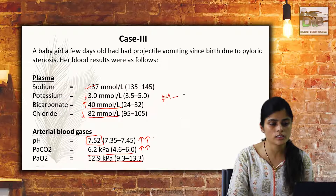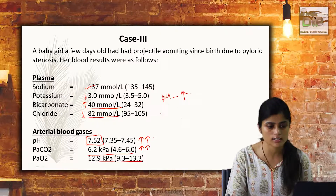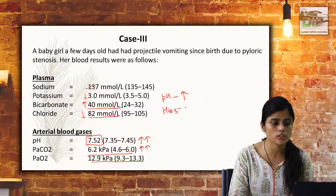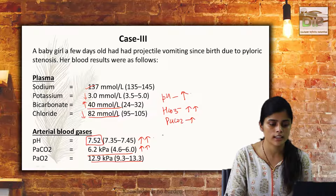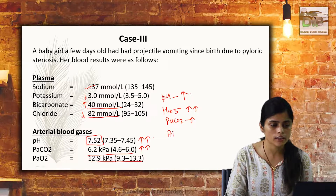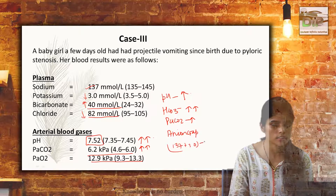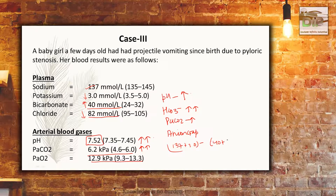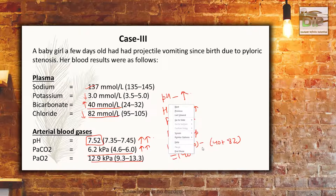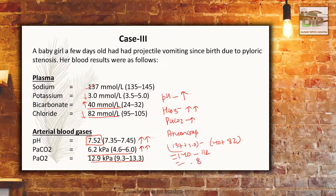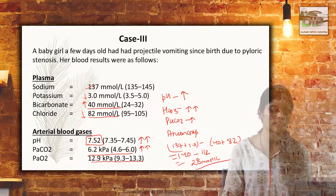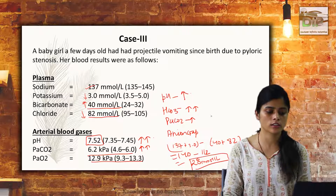The pH is increased, indicating alkalosis. Bicarbonate level is also at a higher level, and PaCO2 is seen to be increasing. When we measure the anion gap, calculating as 137 plus 3 minus 40 plus 82, that gives 140 minus the sum — and the anion gap is also raised.